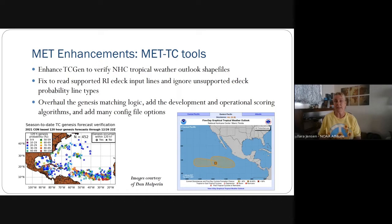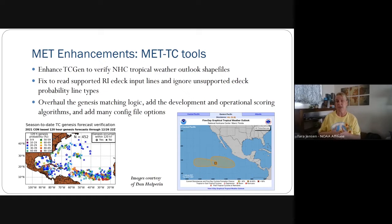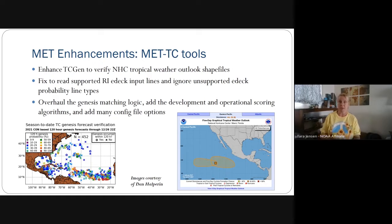For MET TC tools, we did an overhaul on the genesis logic and added development and operational scoring algorithms introduced last week by Catherine, as well as quite a few more configurations. We enhanced TC gen to verify NHC tropical weather outlook shape files, and to read rapid intensification EDEC input line types, and to ignore unsupported EDEC probability line types so it doesn't error out if it doesn't recognize all available line types.